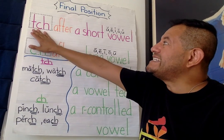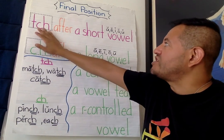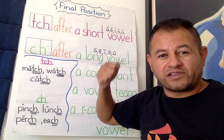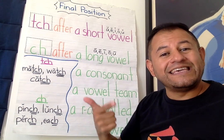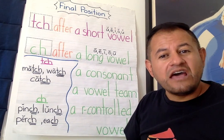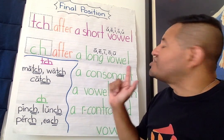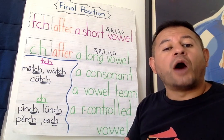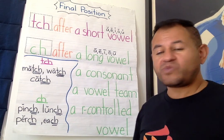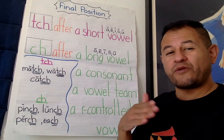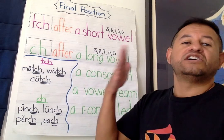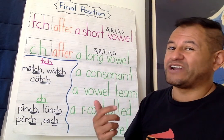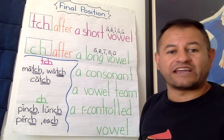It's going to be a T-C-H after a short vowel sound. We know our short vowels are A (apple), E (ed), I (ih), O (octopus), U (up). If you have a word and we hear the short vowel sound followed by that "ch," we're going to add a T-C-H at the ending.